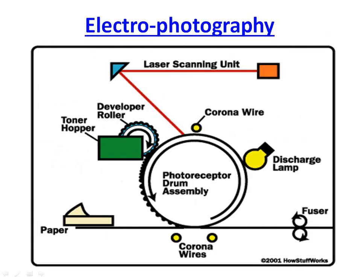Electrophotography: The figure shows the mechanism of electrophotography. The main parts are laser scanning unit, developer roller, toner, drum assembly, corona wire unit, heat fuser, and discharge lamp.